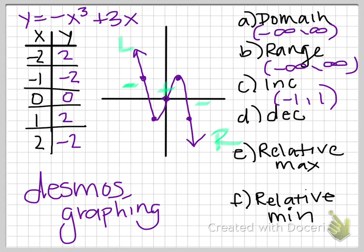I am decreasing from negative infinity to negative 1. So that would be this piece right there. And I'm decreasing again from 1 to infinity. So that has two areas of decreasing.